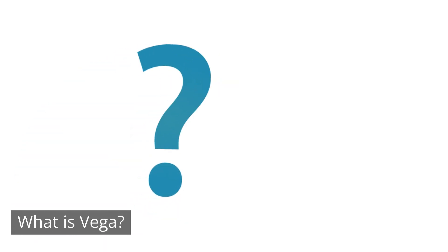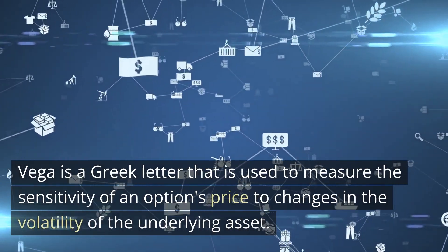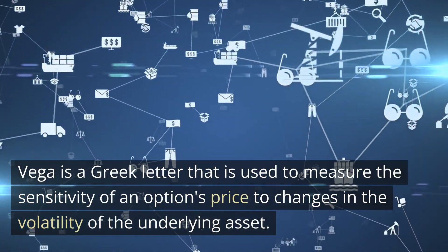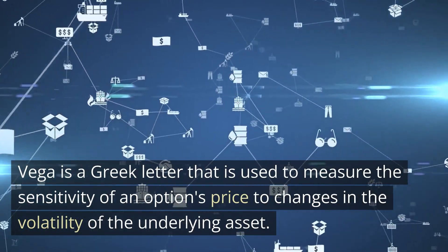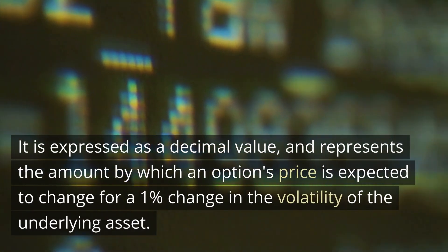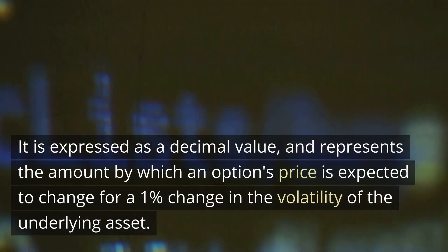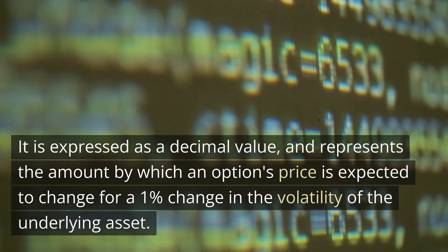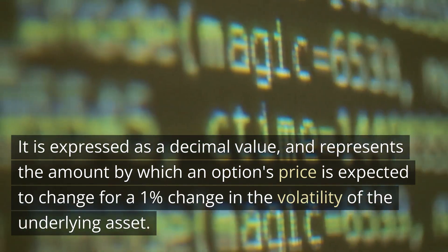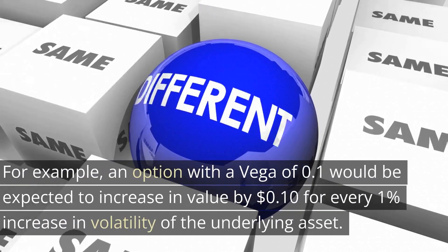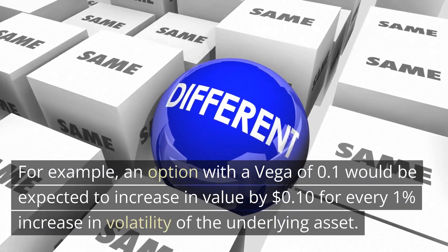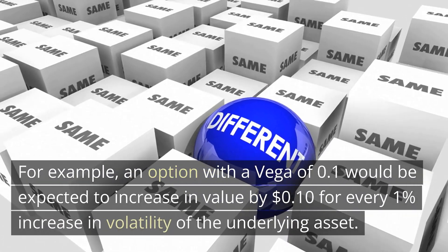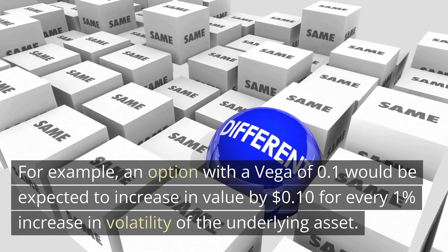VEGA is a Greek letter used to measure the sensitivity of an option's price to changes in the volatility of the underlying asset. It is expressed as a decimal value, and represents the amount by which an option's price is expected to change for a 1% change in the volatility of the underlying asset. For example, an option with a VEGA of 0.1 would be expected to increase in value by 10 cents for every 1% increase in volatility of the underlying asset.